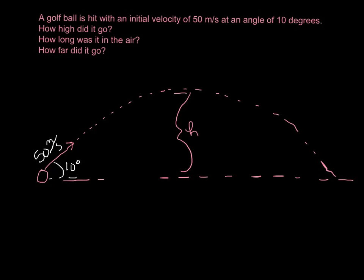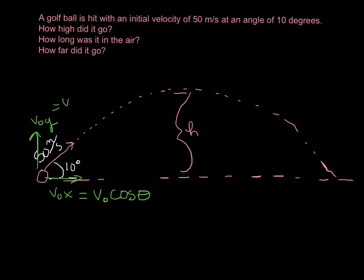One of the very first tasks is we need to take that 50 meters per second that we were given and break it up into its horizontal and vertical velocities, because we're going to make the horizontal-vertical table. To do that, we're going to find v-naught-x and v-naught-y. We use cosine for v-naught-x, so v-naught cosine theta, and y is going to be v-naught sine theta.